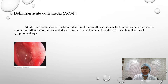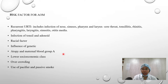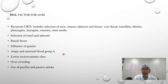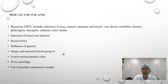There are many risk factors, more commonly seen in children. These include recurrent upper respiratory tract infections. The upper respiratory tract includes the nose, paranasal sinuses, pharynx, and larynx. Any acute infection of these structures increases the chance of acute otitis media — this includes sore throat, tonsillitis, rhinitis, pharyngitis, and laryngitis. Pharyngitis involves infection of the pharyngeal mucosa.